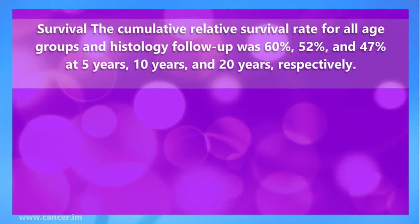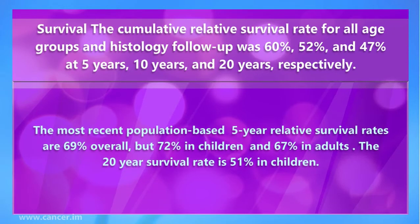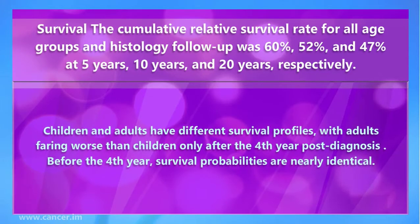The cumulative relative survival rate for all age groups was 60 percent, 52 percent, and 47 percent at five, ten, and 20 years respectively. Patients diagnosed with medulloblastoma or PNET are 50 times more likely to die than a matched member of the general population. The most recent population-based five-year relative survival rates are 69 percent overall — 72 percent in children and 67 percent in adults. The 20-year survival rate is 51 percent in children.